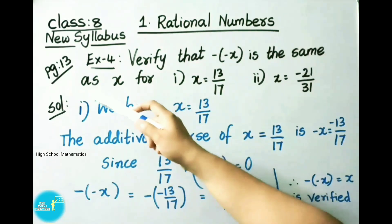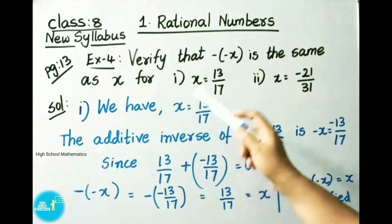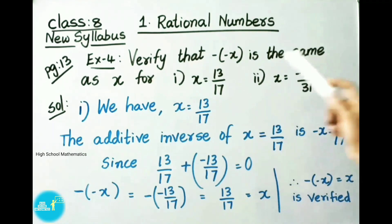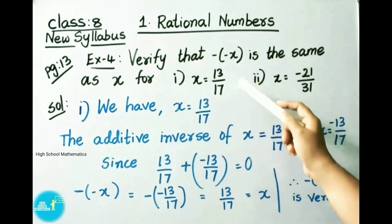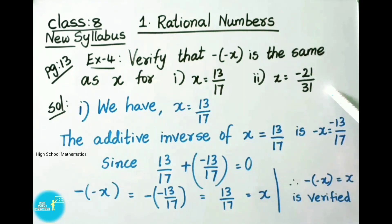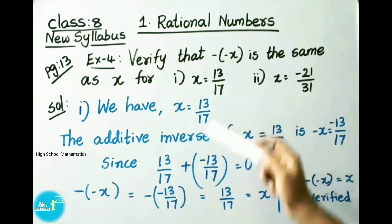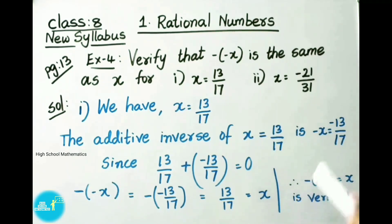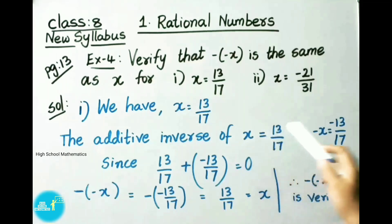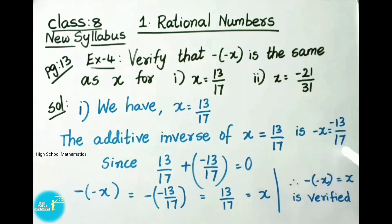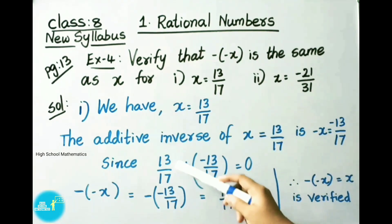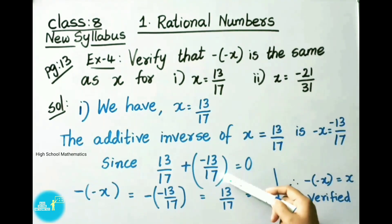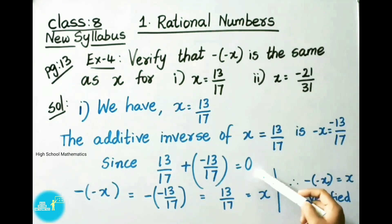Let us see now page number 13, example 4. Verify that minus of minus x is the same as x for x equal to 13 by 17 and x equal to minus 21 by 31. Let us see the solution. First one, we have x equal to 13 by 17. The additive inverse of x, that is 13 by 17, is minus x. The additive inverse of 13 by 17 is minus 13 by 17. Since we know 13 by 17 plus of minus 13 by 17 is equal to 0.